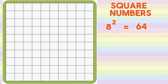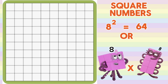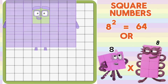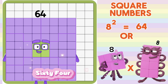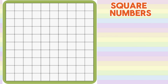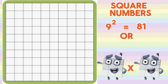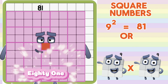Here's another one. 8 squared is equals to 64, or 8 multiplied by 8 is equals to 64. 9 squared is equals to 81, or 9 multiplied by 9 is equals to 81.